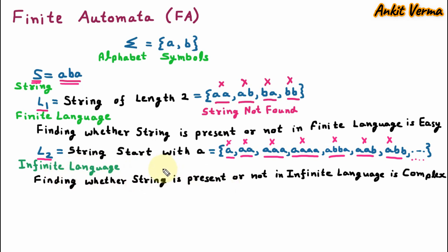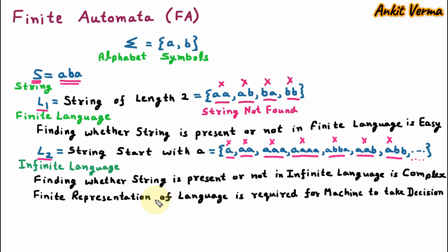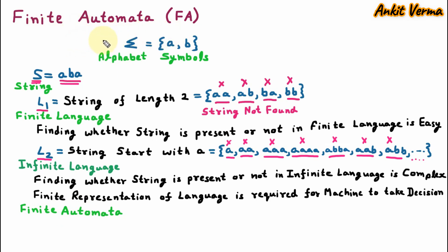So a finite representation of language is required for a machine to take decisions, and this finite representation of language is done by finite automata. Here the automata is a machine or some model — so it is the finite machine or finite model. Therefore, finite automata is the finite representation of language.